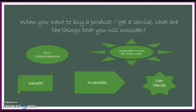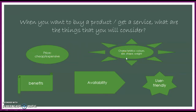When you want to buy a product or get a service, what are the things that you will consider? There are a few things. First of all, we look at the purpose. Next, we might want to consider the price, and then the characteristics — such as color, size, shape, weight — and then the benefits, the availability, and whether it is easy to use or not. There are many other things you can consider.